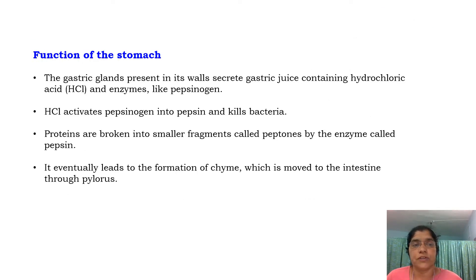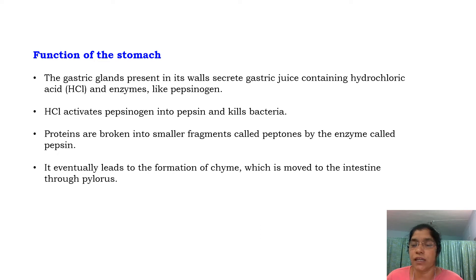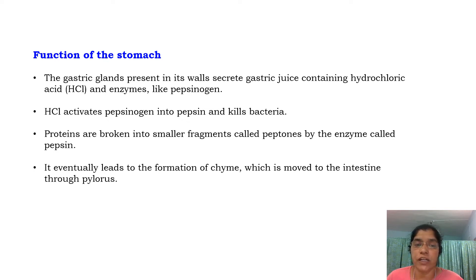The mucosa forms gastric glands in the stomach. The gastric glands present in the wall secrete gastric juice containing hydrochloric acid and enzymes like pepsinogen. Hydrochloric acid activates pepsinogen into pepsin and kills bacteria. Proteins are broken into smaller fragments called peptones by the enzyme pepsin. This eventually leads to the formation of chyme, which is passed to the intestine through the pylorus.